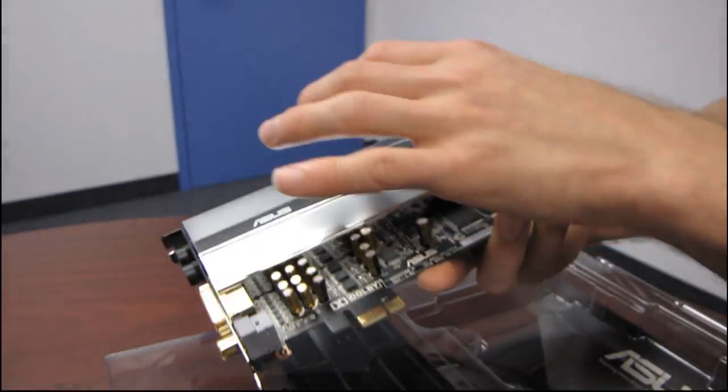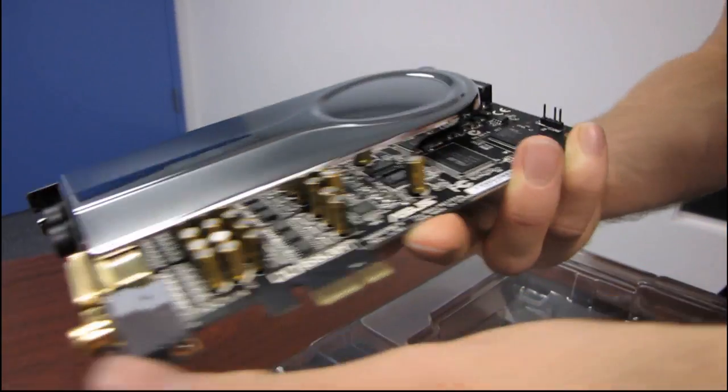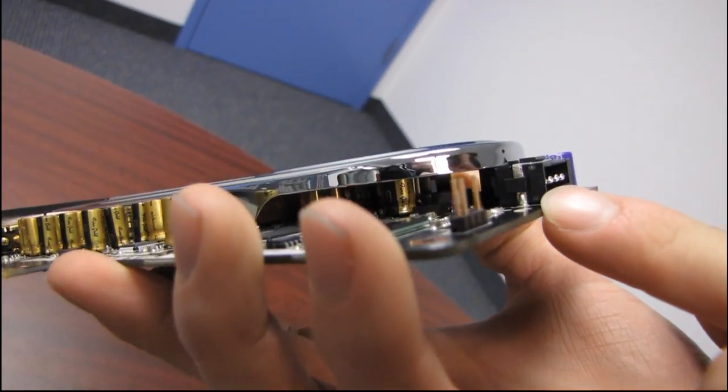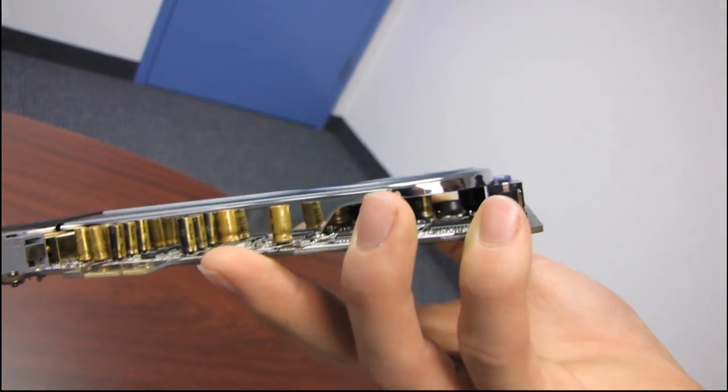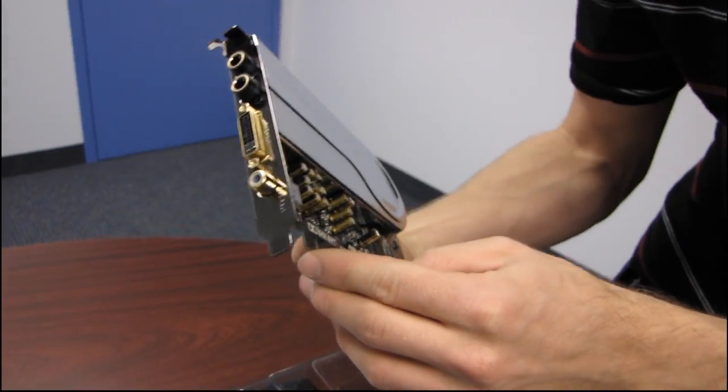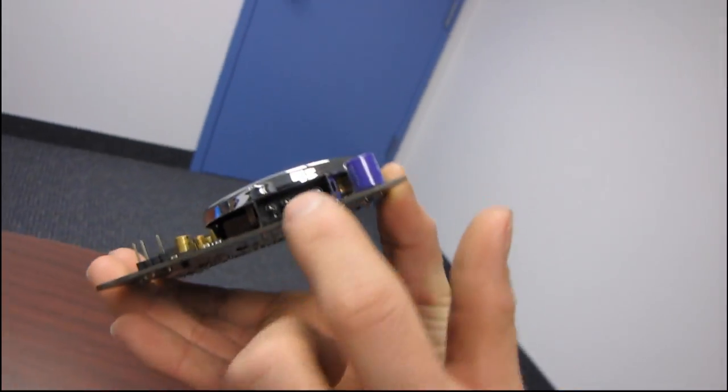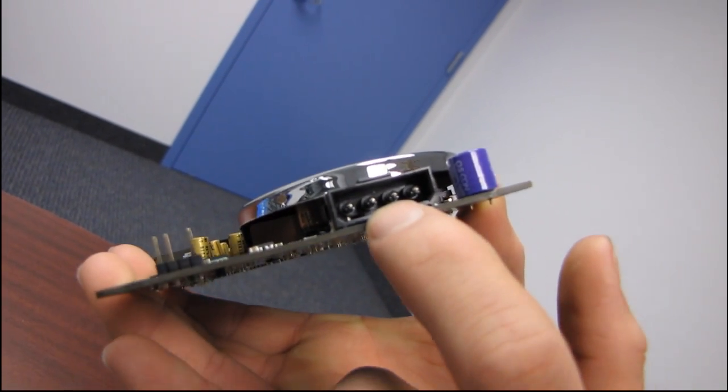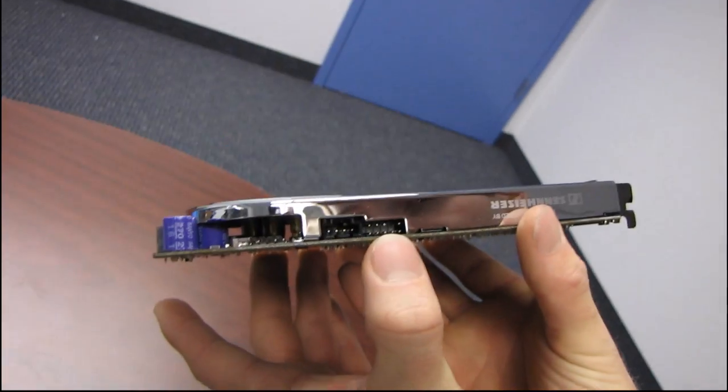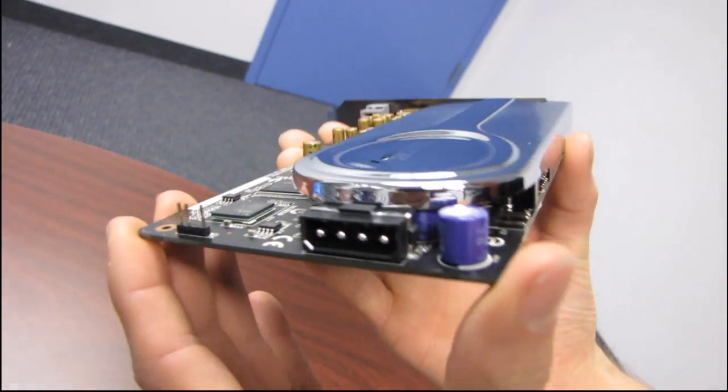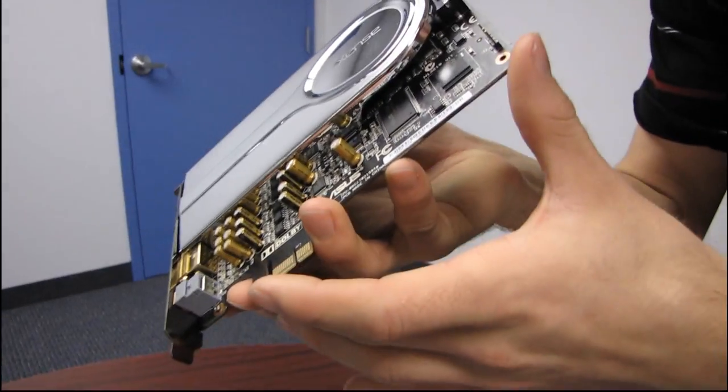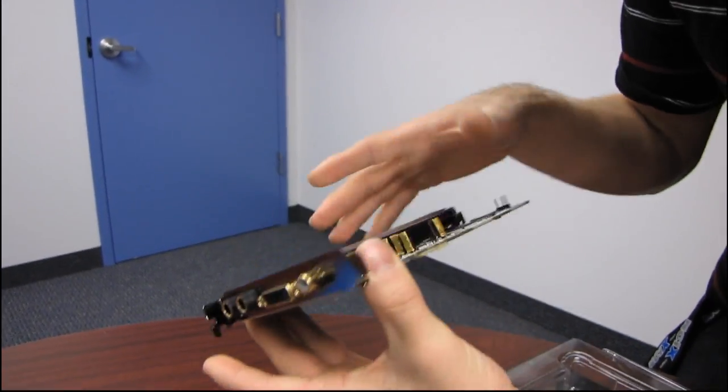So there is that shield that they were talking about. So you can actually see under it in some places. You can even see a copper heat sink down there. So they are actually cooling, probably the amplifier would be my guess, because I can't imagine the audio processor needs a copper heat sink on it. But you can see right here that this card does require external power from a 4-pin Molex connector.